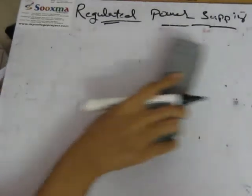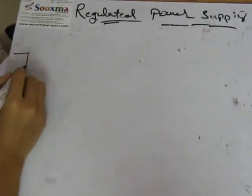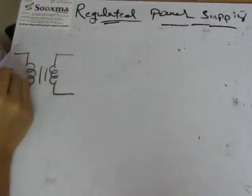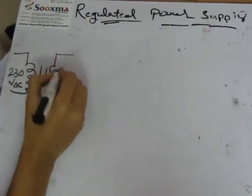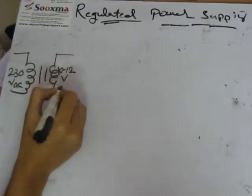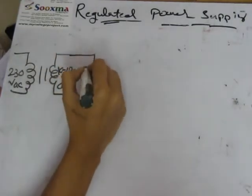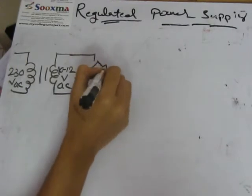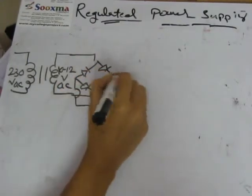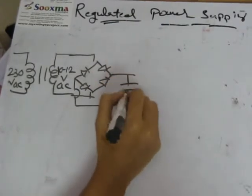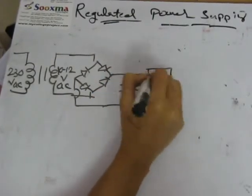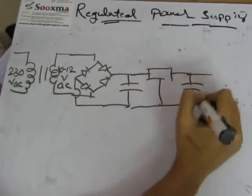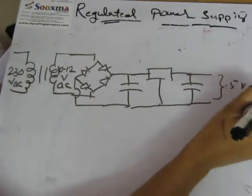Now let's draw a total circuit diagram of this regulated power supply system. First we place the step-down transformer, then the bridge rectifier — which is nothing but 4 diodes connected back to back — then a smoothing capacitor, after that the voltage regulator IC, then another small capacitor, and from the output we are going to get 5 volts of DC.